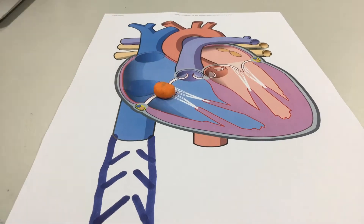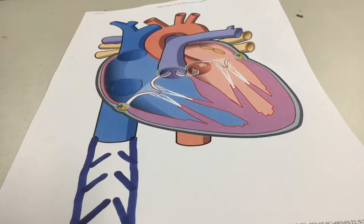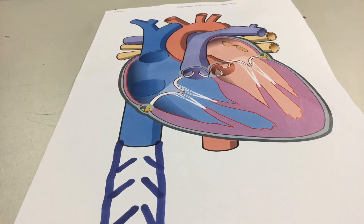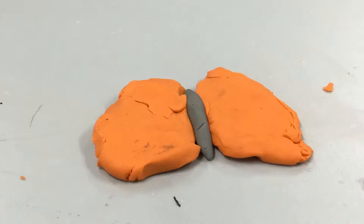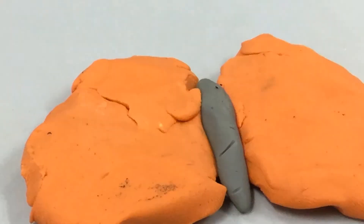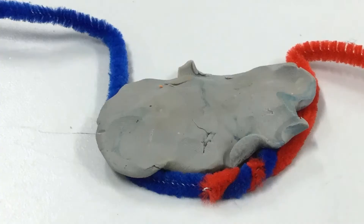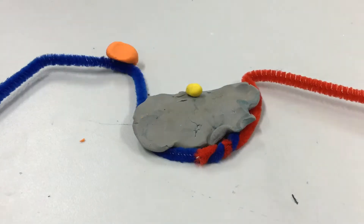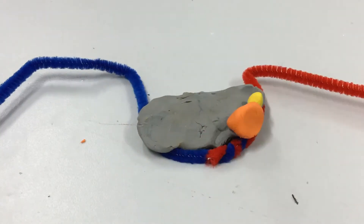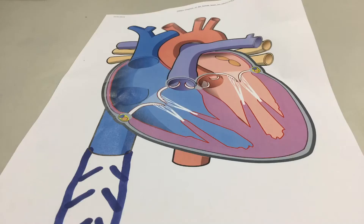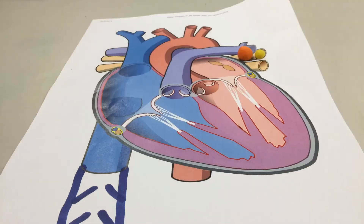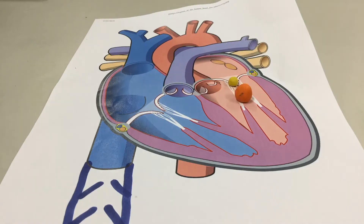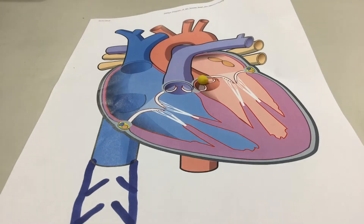It then moves through the right atrium and into the right ventricle. After that, the pulmonary artery. Through that, it goes to the lungs where the oxygen is picked up through the one-cell thick walls of the capillaries. Through the pulmonary vein, back into the heart, in which it goes to the left atrium and then the left ventricle.